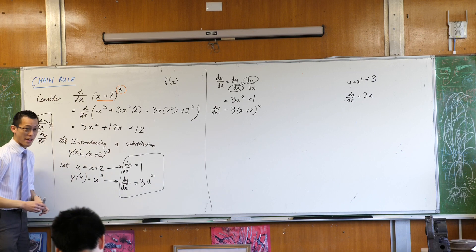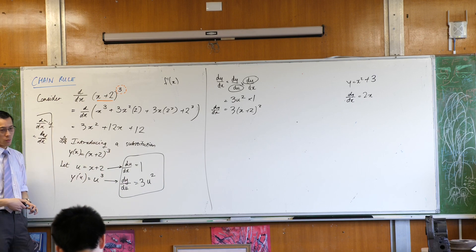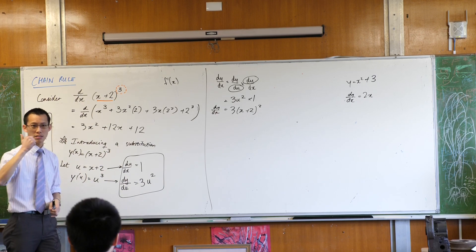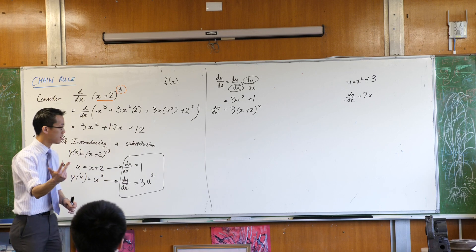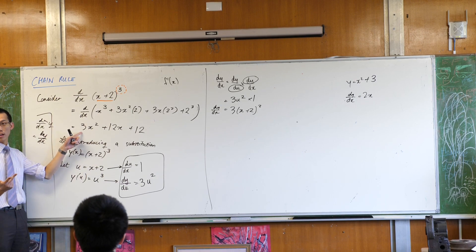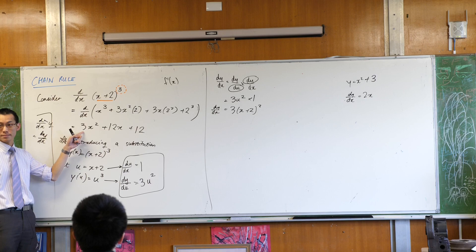Which I think you'll find if you expand, because (x+2)² is what? x²+4x+4, right? Then you multiply by 3. And sure enough, this is what you get.